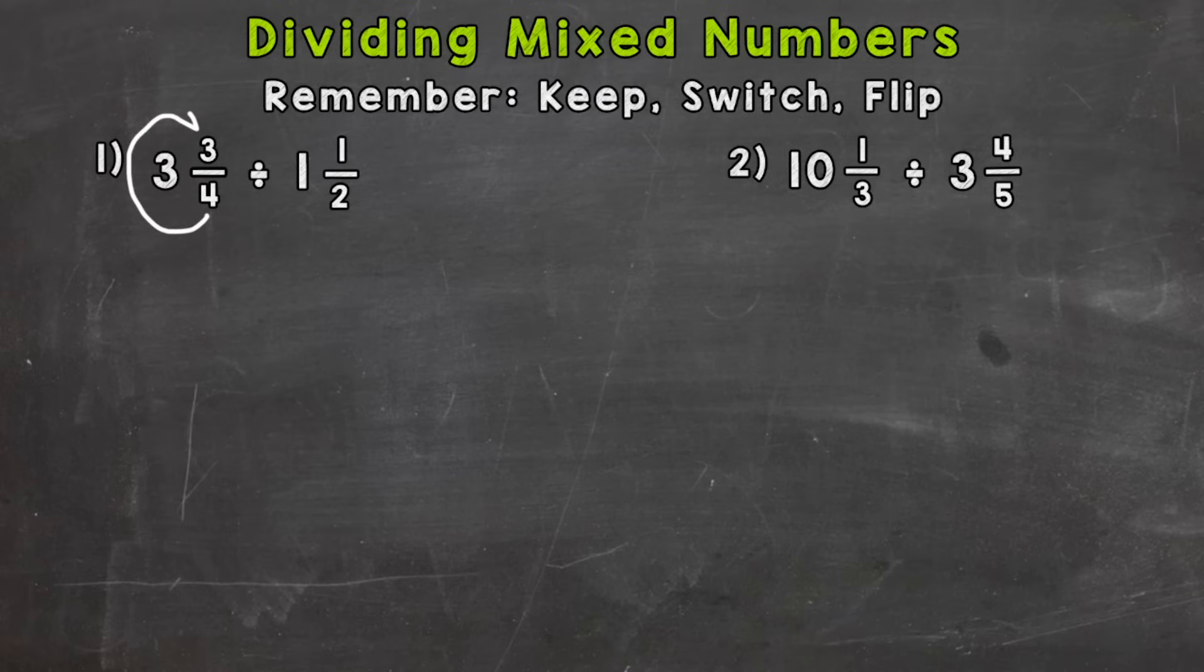So let's change three and three-fourths to an improper fraction. The first thing we need to do is four times three and then add the numerator. So four times three is 12, plus that three is 15. So that 15 is going to be the numerator of our improper fraction. We keep the denominator of four. Denominator stays the same. Now, 15-fourths holds the same value as three and three-fourths. We're not changing the problem at all, just putting it into a different form.